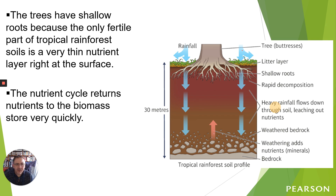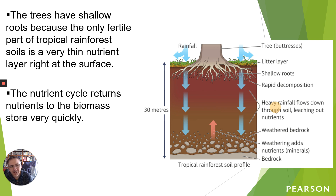The trees have very shallow roots because there's no point going further down - there are no nutrients down there. This is why we see those very shallow roots just getting nutrients from the leaf litter, and again those buttress roots we discussed providing stability.